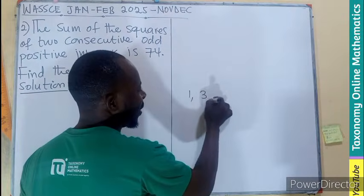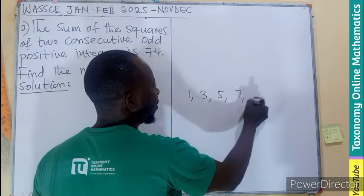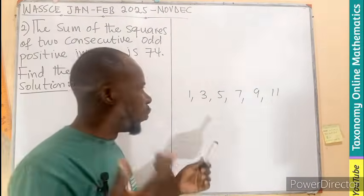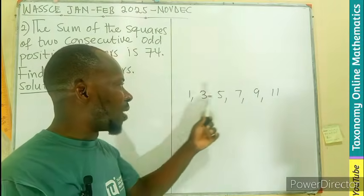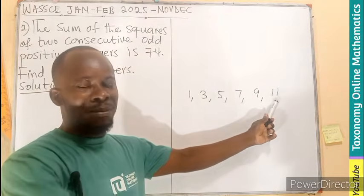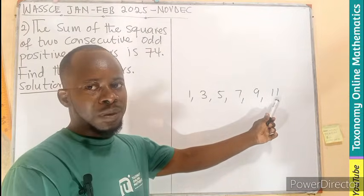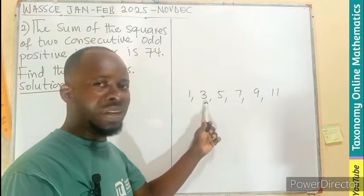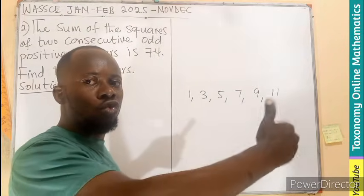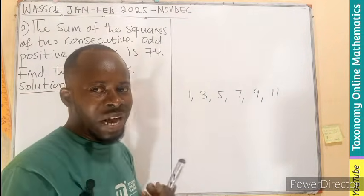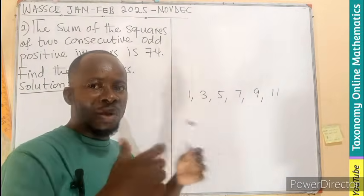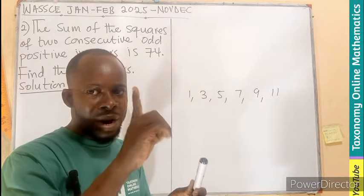We have 1, 3, 5, 7, 9 in that order. So if I ask you to think of an odd number, you might be thinking of 1, I might be thinking of 7, somebody would think of 11. What will be the next number after 11? You can see there is an addition of 2 to each number. Since we cannot tell the exact number, we all need to think of one number.